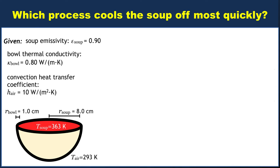So let's consider radiation out the top of the soup bowl first. The expression for radiation is Q̇ = εσA(T^4).